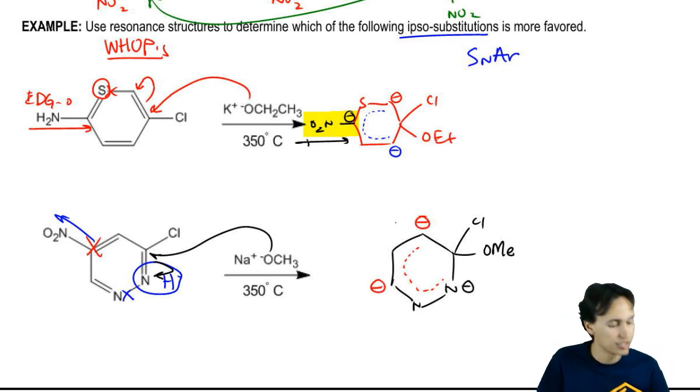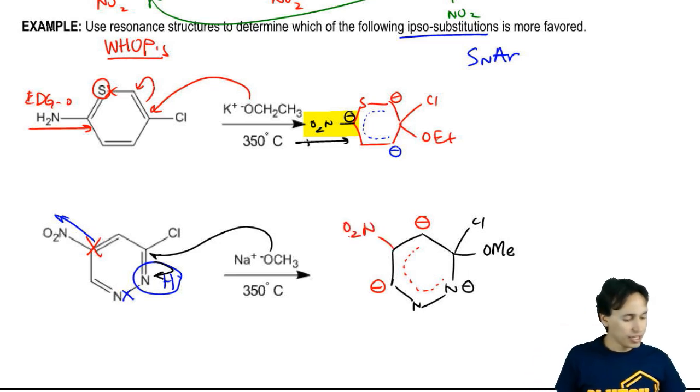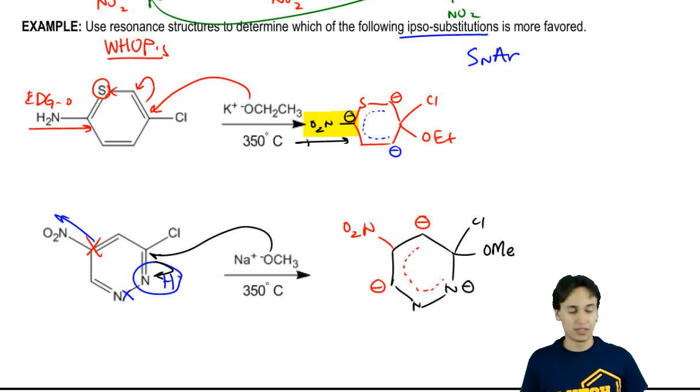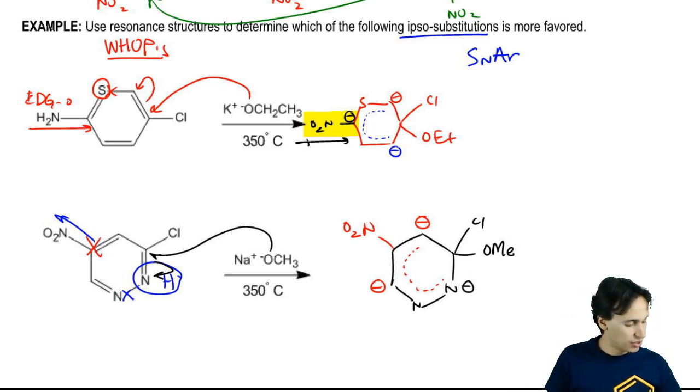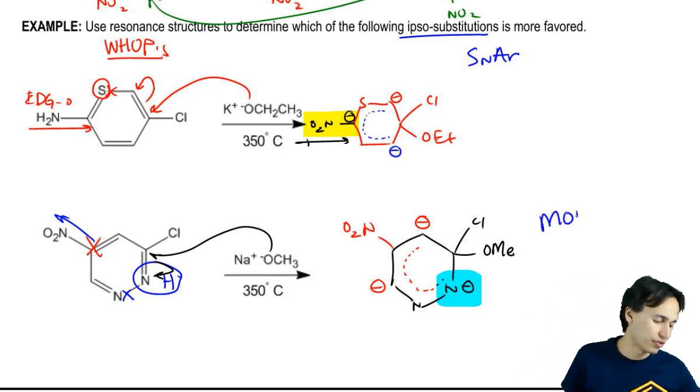I've got my dotted line representing my anionic sigma complex. I forgot there's a nitro group over here. My negative charges, two of them aren't stabilized but one of them is. This one is stabilized because it's on a heteroatom so this one is going to be more favored.